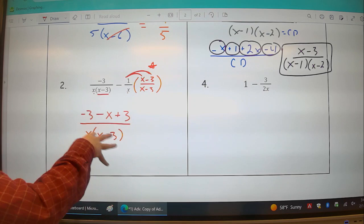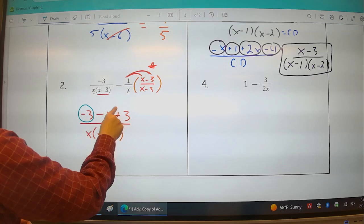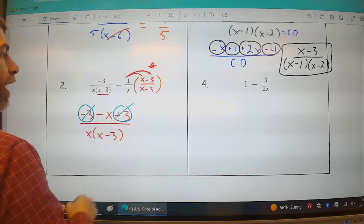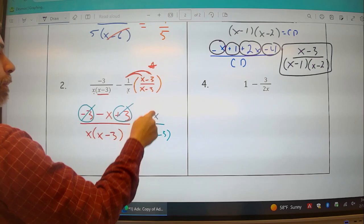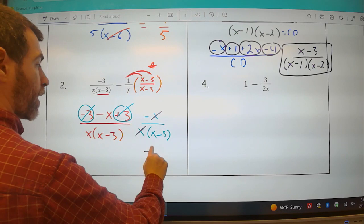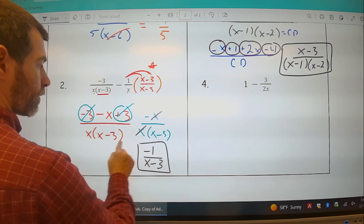But we can still work with this. I can still say, well, negative 3 plus 3, that's 0. I just have negative x over x times x minus 3. And with an x on top and an x on bottom, I can cancel those and just say my answer is negative 1 over x minus 3.